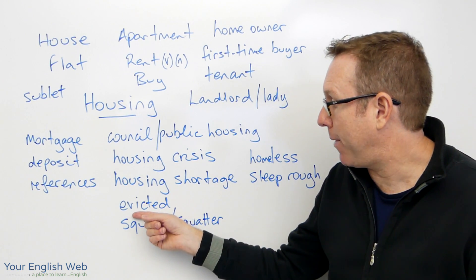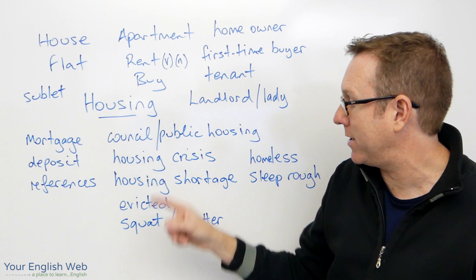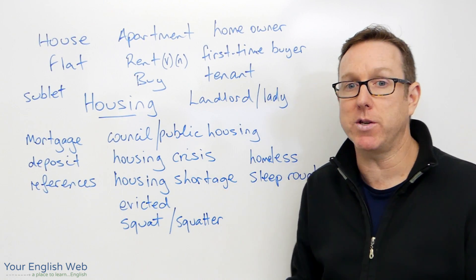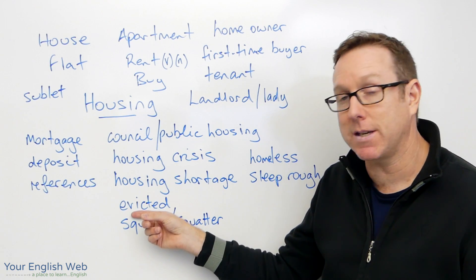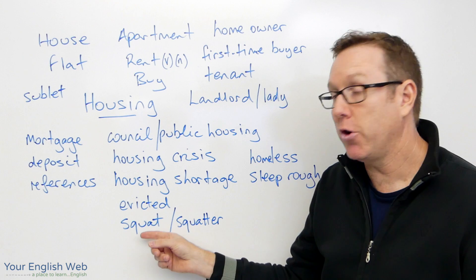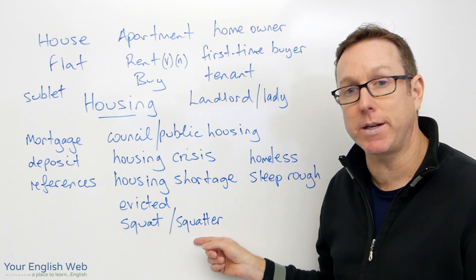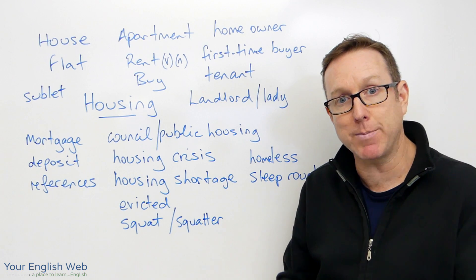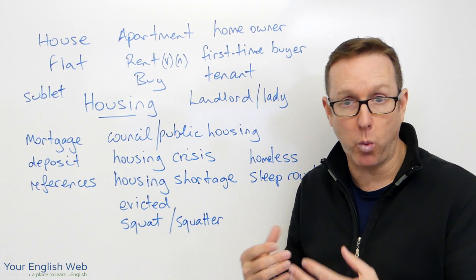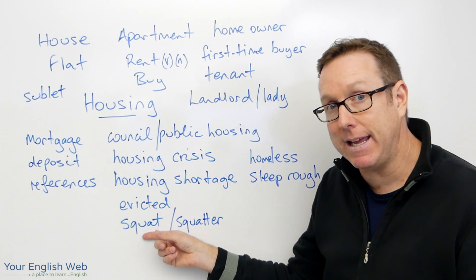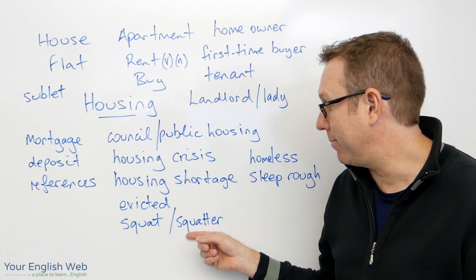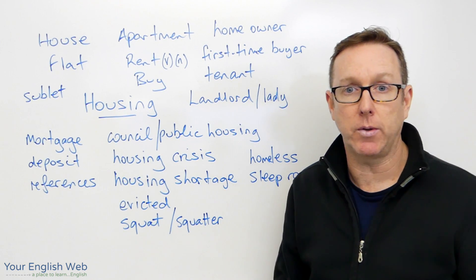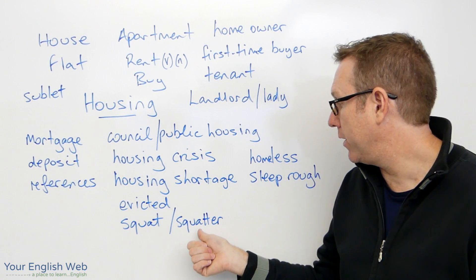If you can't pay your mortgage or rent, you can get evicted from your property. Eviction is normally a legal process in which the landlord or bank starts proceedings to remove you. If you become evicted, you might have to squat — you become a squatter. A squat is a property being used illegally, perhaps an abandoned home, old factory, or warehouse where people move in illegally. The place itself can also be called a squat.